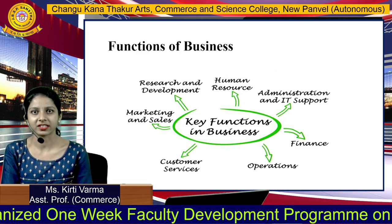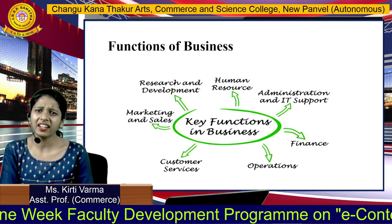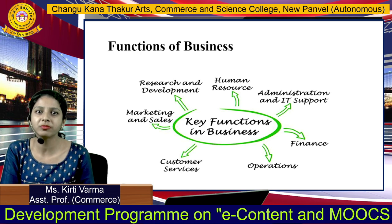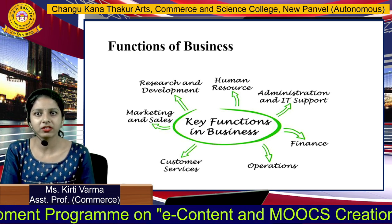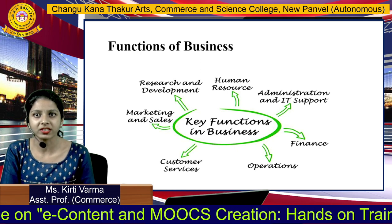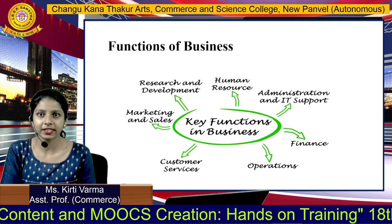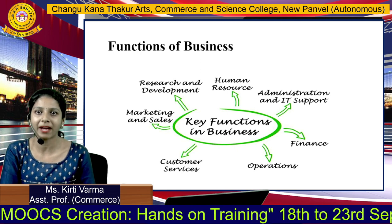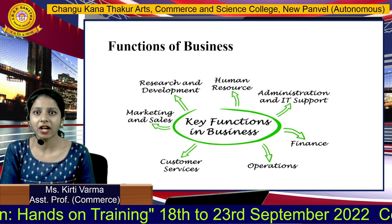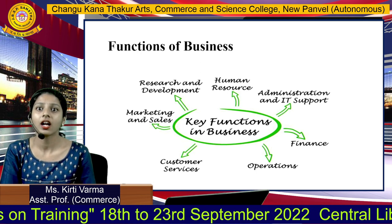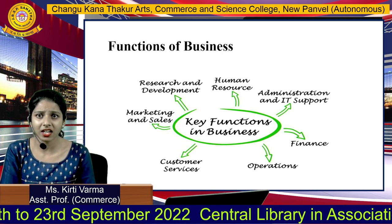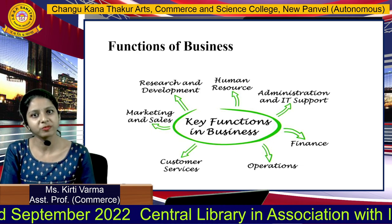Next is the function of business. Business involves various functions. The key functions are: number one, human resource function. Business involves a majority of humans, and it is a collective function. Humans play a very important role in managing business. The main functions of human resource are planning, organizing, staffing, directing, and controlling.